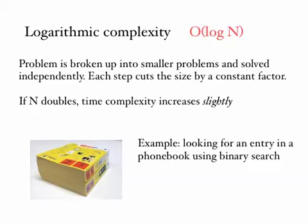Now in this case, if N doubles, time complexity increases only slightly. So for instance, you can see here the phone book, it's divided for you into A to K and L to Z. And you start by picking a volume.